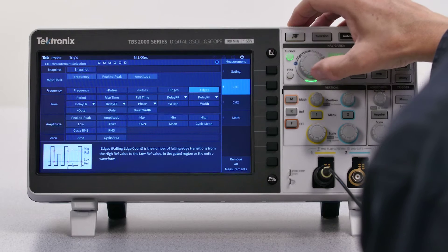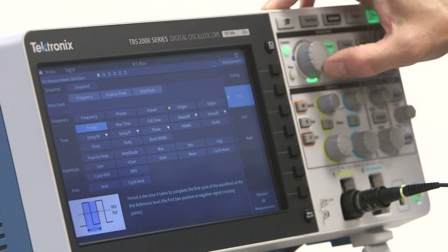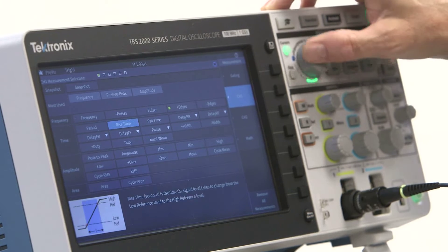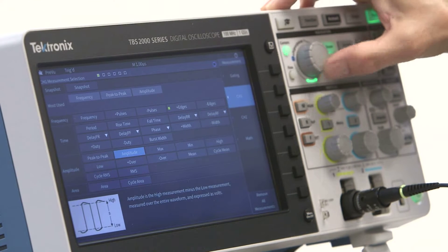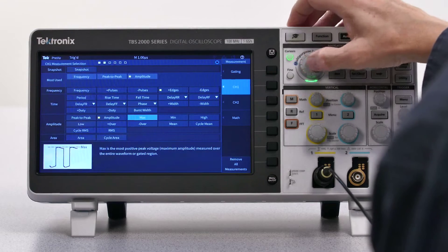Or, you can select only the measurements you're interested in. Let's count the number of rising edges and get the amplitude and look at the max voltage. Graphical tips illustrate each measurement.